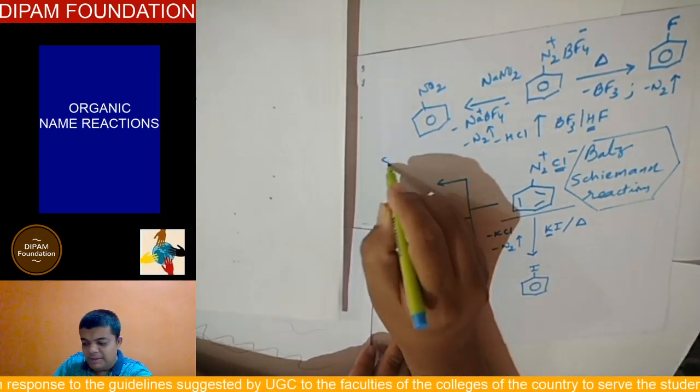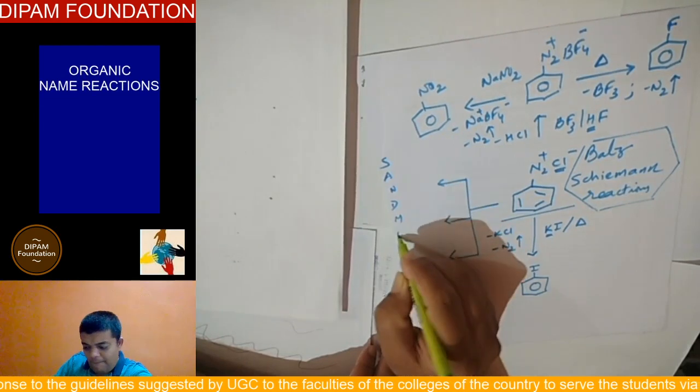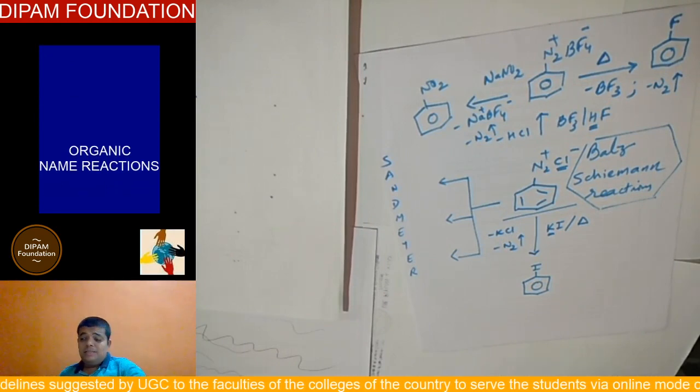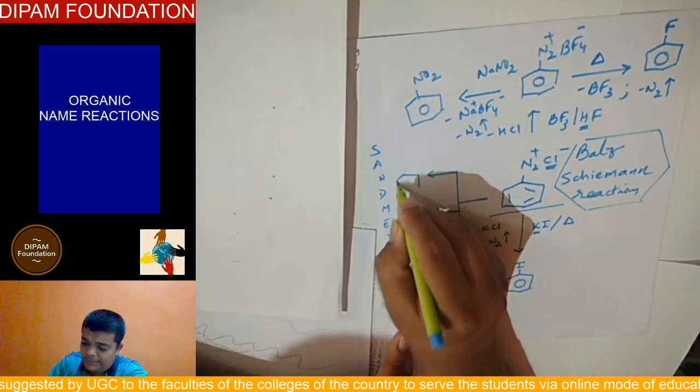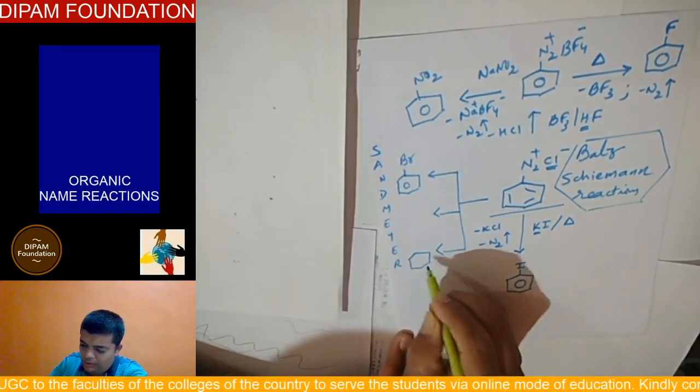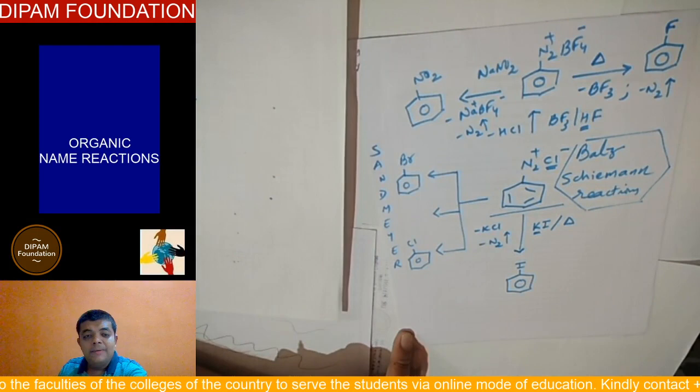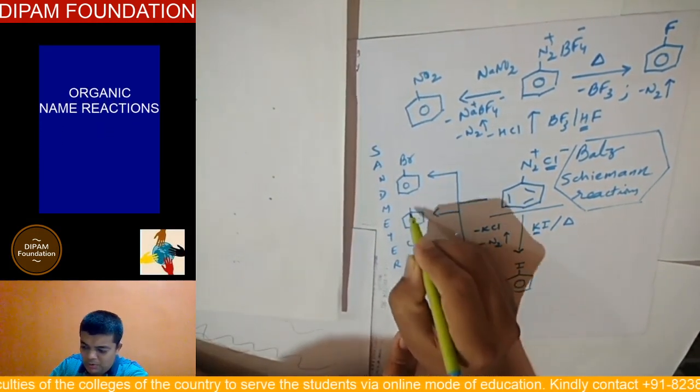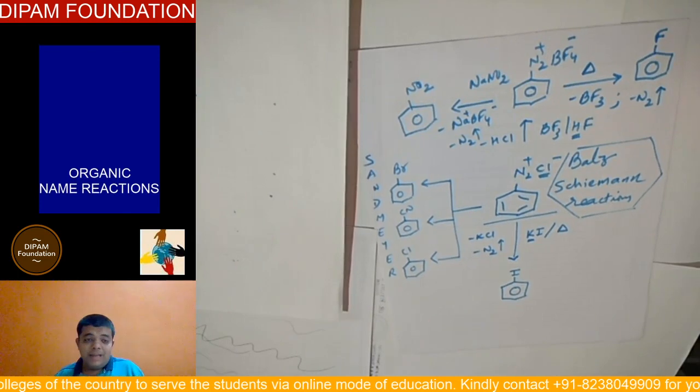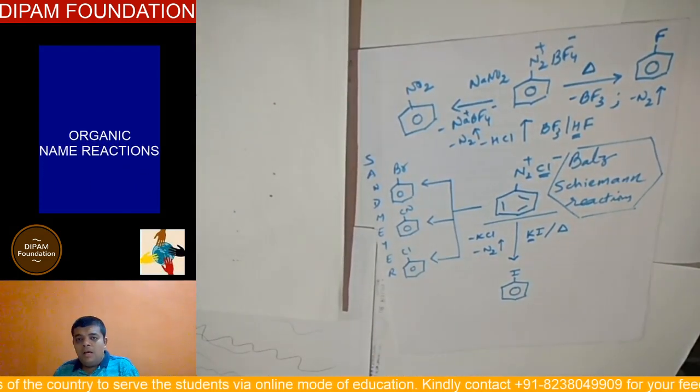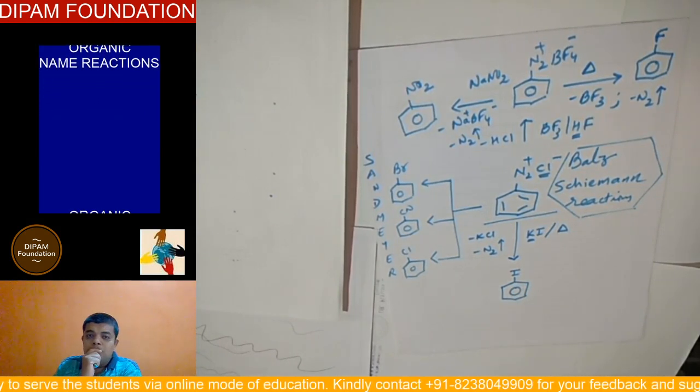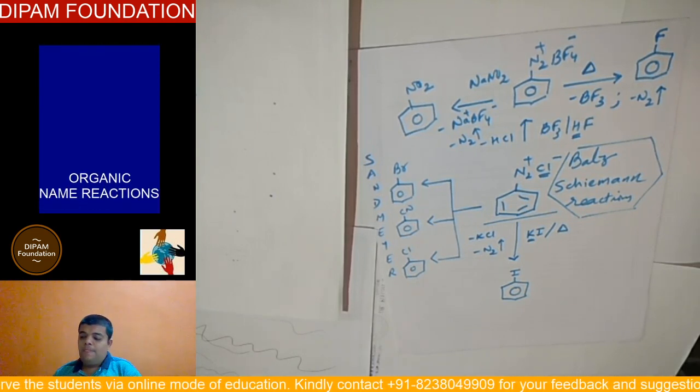The first three products have been released by Sandmeyer. So, let us understand the 3 products: 1 Bromobenzene, 2 Chlorobenzene and 3 Cyanobenzene. And when you prepare Chlorobenzene, Bromobenzene and Cyanobenzene from Benzene-Diazonium Chloride salt, that particular step which you are undertaking is called Sandmeyer Reaction.